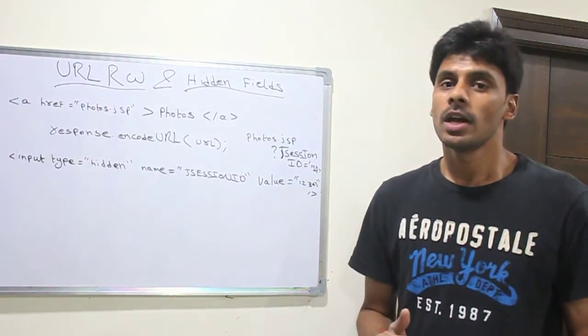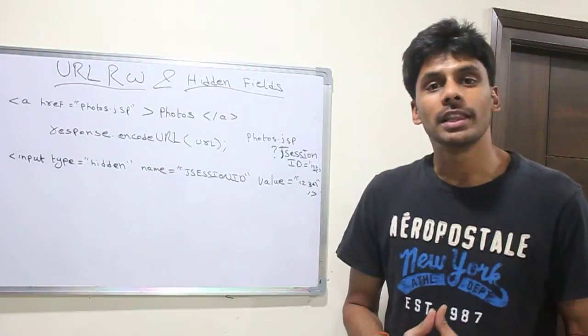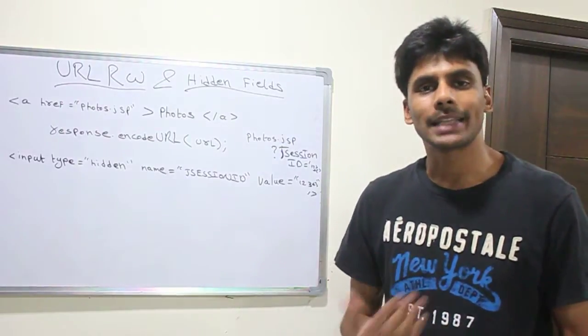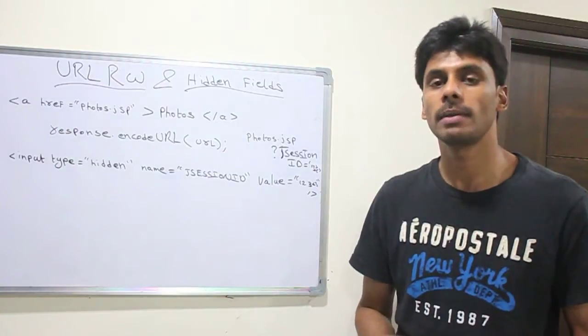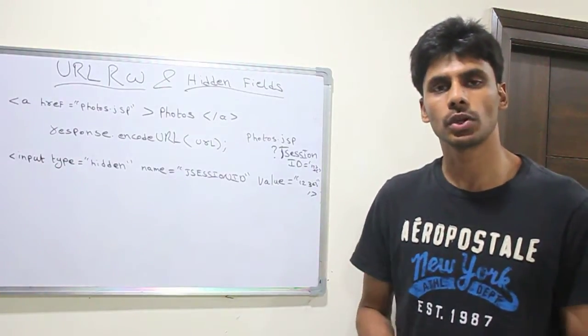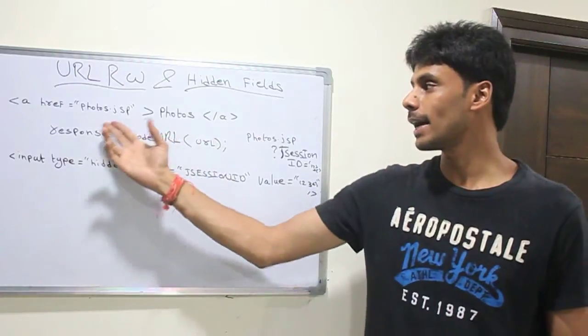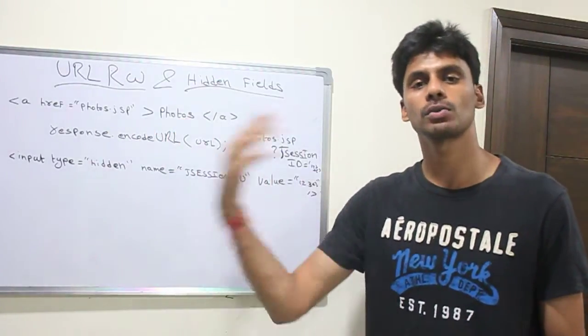In URL rewriting, your URL gets appended with the unique ID that can be used to track the session. The unique token that has to be sent back and forth between the client and server will be appended to every URL on your web page. So if you are dynamically generating, let's say, a photos.jsp or photos web page.